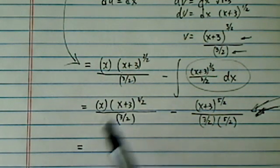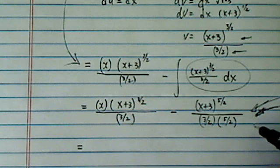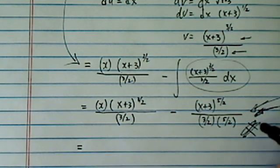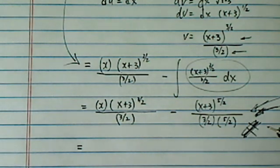Alright, now next step, and I'm going to simplify it. On the test, if you run out of time, leave it here. Okay, so at this point, it's not complete, but the teacher can't take more than a point away.